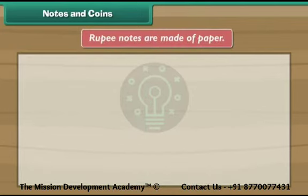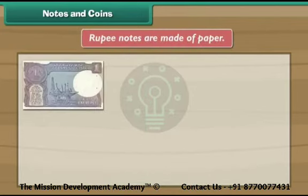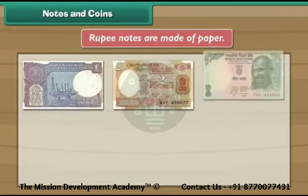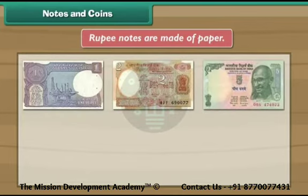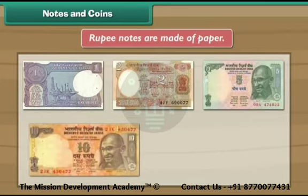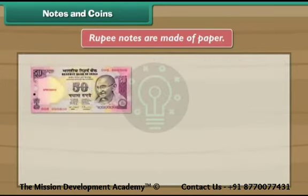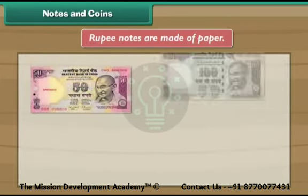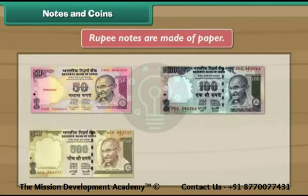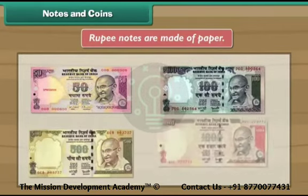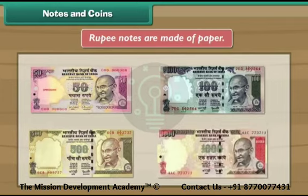Rupee notes are made of paper. There are 1, 2, 5, 10, 20, 50, 100, 500 and 1000 rupee notes.